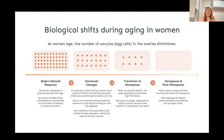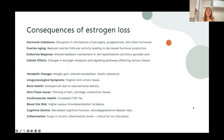Because of this altered hormonal balance — something the body is not used to — cycles become irregular and usually longer. As the egg cell reserve depletes further, FSH levels become very high. Once the egg cell reserve is exhausted, estrogen no longer cycles and is continuously low. Postmenopause, as previously described, is characterized by the absence of menstrual cycles and continuously low estrogen levels.